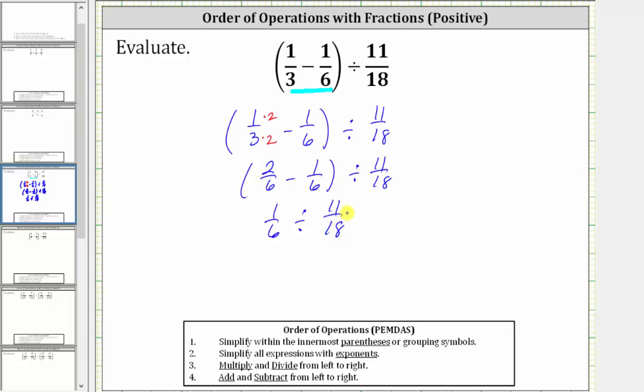From here, dividing by a fraction is equivalent to multiplying by the reciprocal, which means dividing by 11/18 is equivalent to multiplying by 18/11. So now we write the quotient as 1/6 times 18/11.